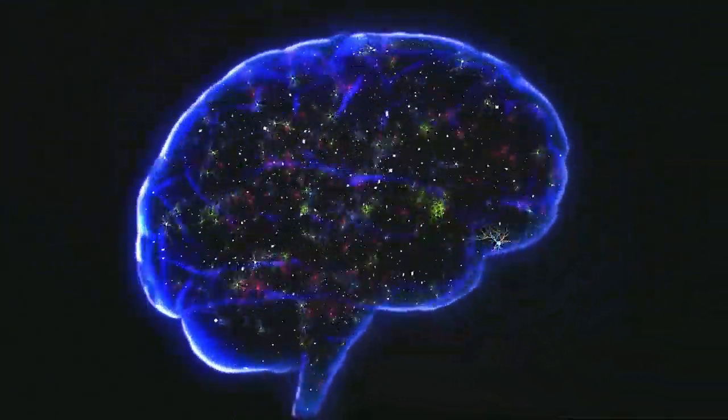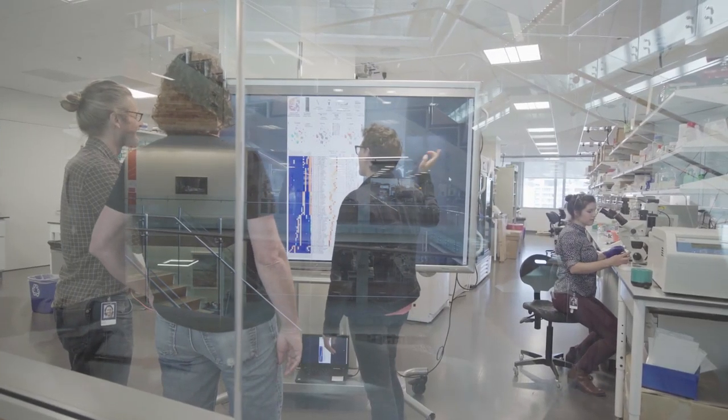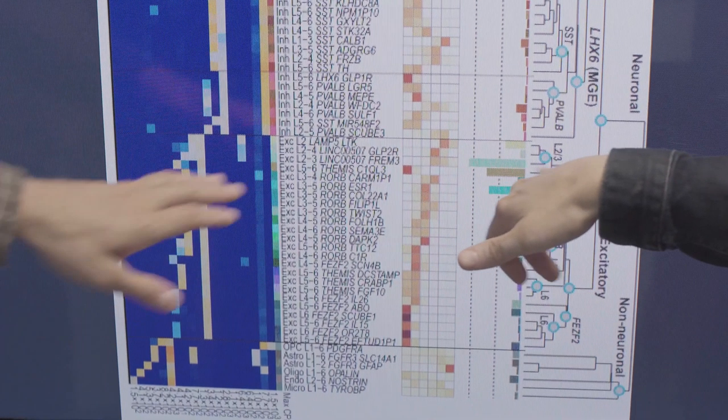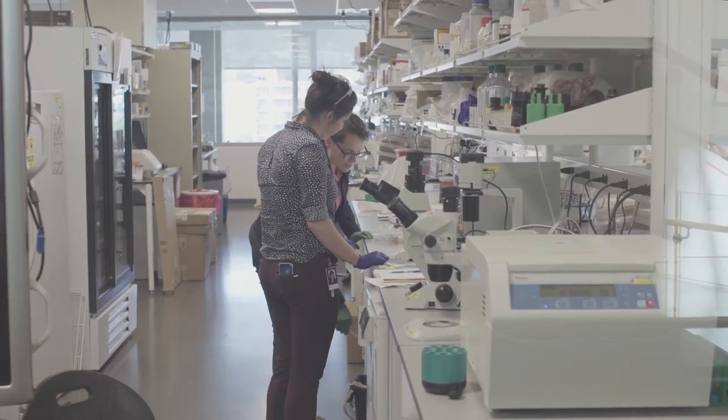The parts are really the cells. There are billions of cells in the brain and we're trying to group them based on their similarity. We're trying to build a sort of periodic table of all of the cells that are present in the human cortex.